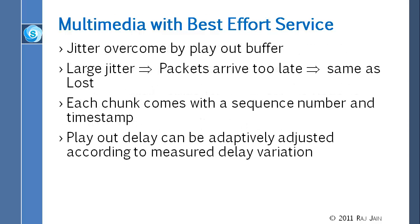Jitter is overcome by a playout buffer. Jitter is the variability in the delay. We keep a buffer at the end so that even though packets are coming irregularly, we are playing them regularly. If the jitter becomes very large, we will not be able to get or play the packets on time and will have to lose them. Each chunk of voice or video that comes has a sequence number and a timestamp, so we know when to play it.